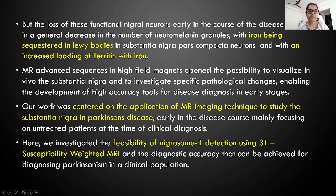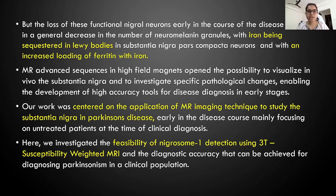MR advanced sequences in high-field magnets open the possibility to visualize in vivo the substantia nigra and to investigate specific pathological changes, enabling the development of high-accuracy tools for disease diagnosis in early stage. Our work was centered on the application of MR imaging techniques to study the substantia nigra in Parkinson's disease early in the disease course, mainly focusing on untreated patients at the time of clinical diagnosis. Here we investigated the feasibility of nigrosome 1 detection using 3D susceptibility-weighted MRI and the diagnostic accuracy that can be achieved for diagnosing Parkinson's in a clinical population.